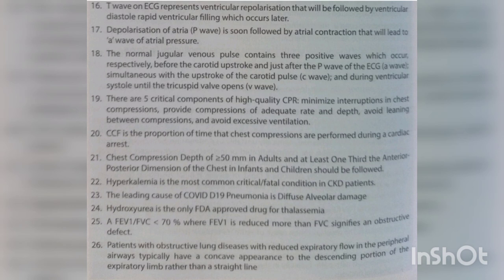Chest compression depth of greater than 50 mm in adults, and at least one-third of the anterior-posterior dimensions of the chest in infants and children, should be followed. Hyperkalemia is the most common critical or fatal condition in CKD patients. The leading cause of COVID-19 pneumonia is diffuse alveolar damage. Hydroxyurea is the only FDA-approved drug for thalassemia.